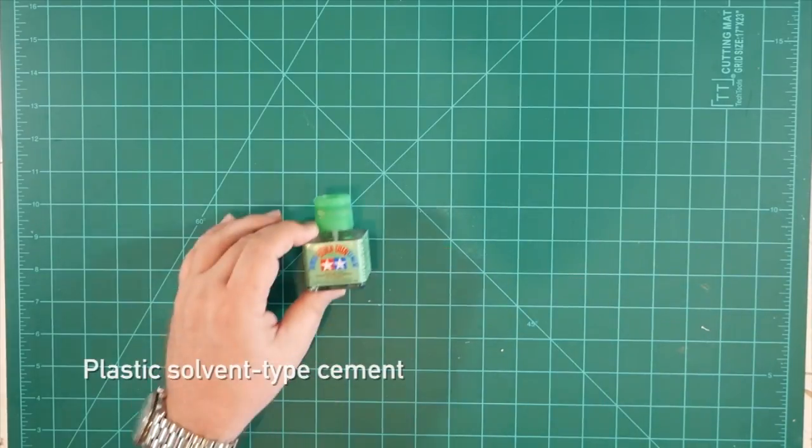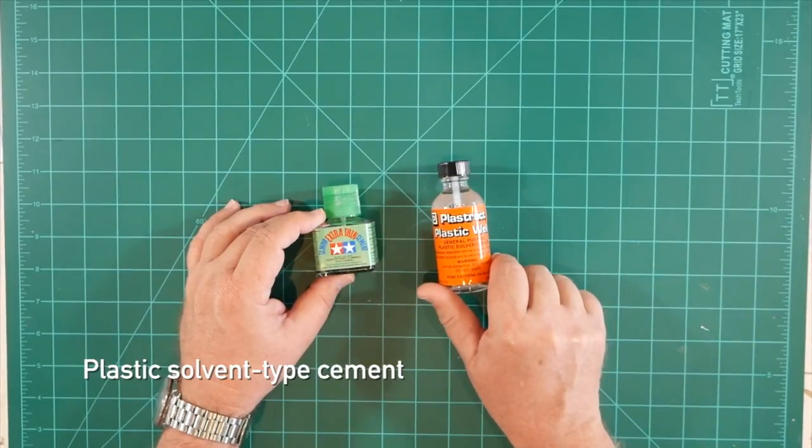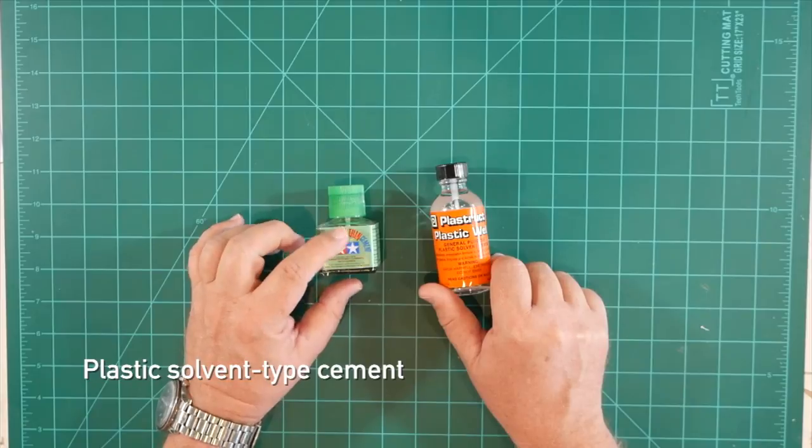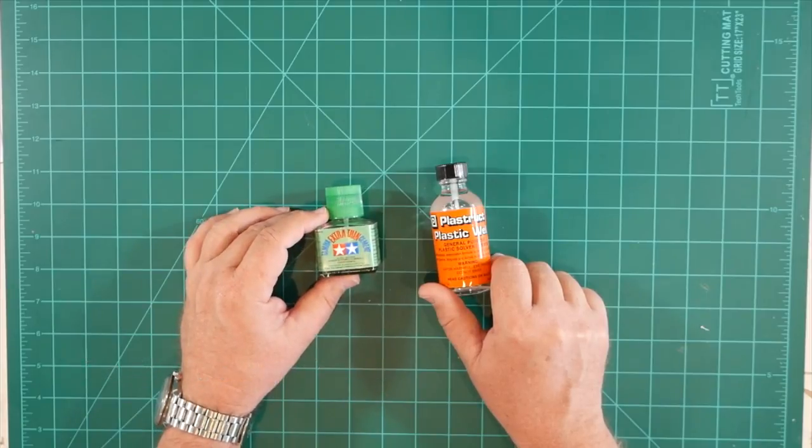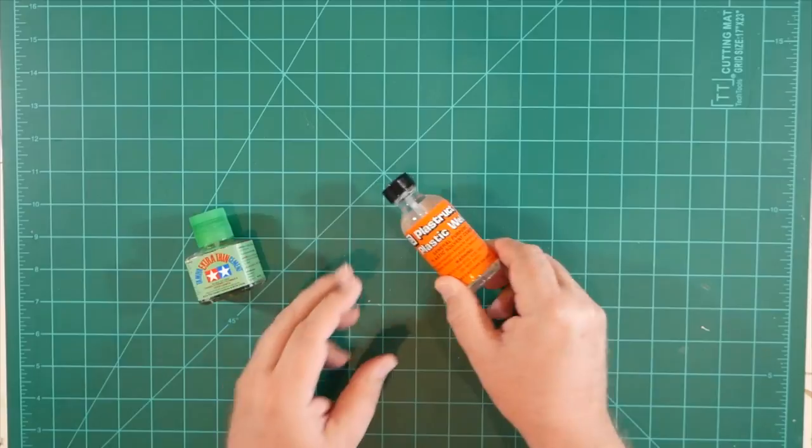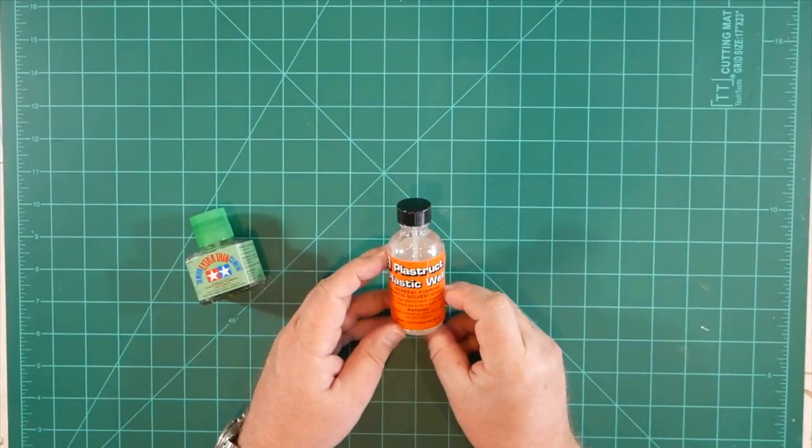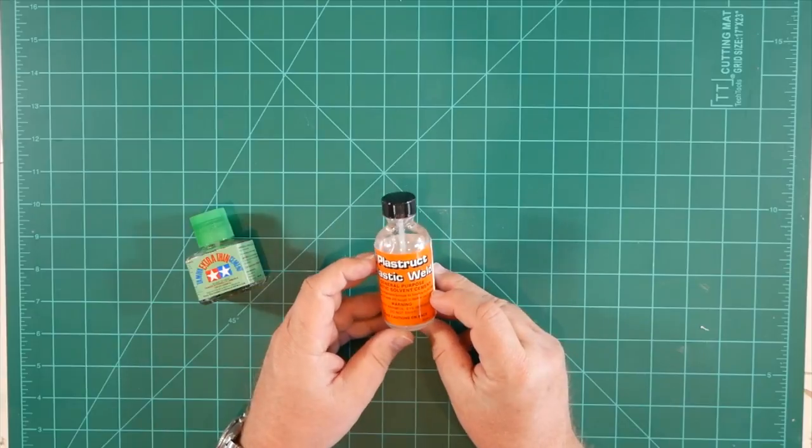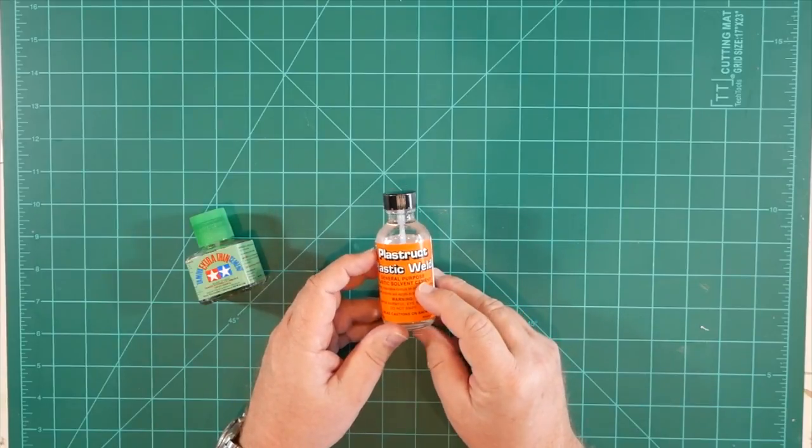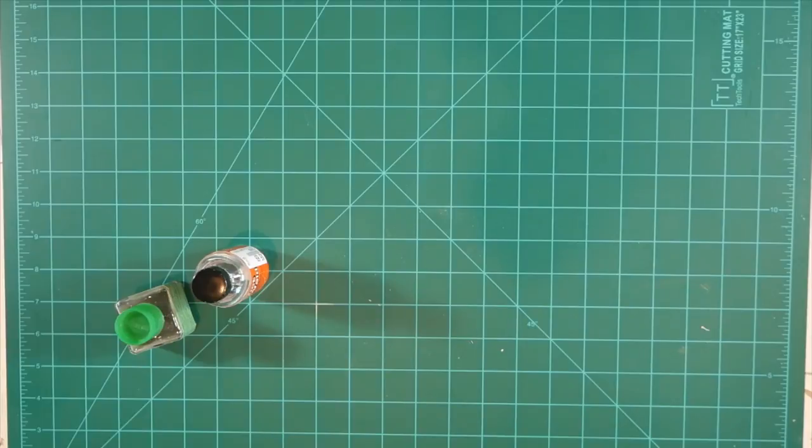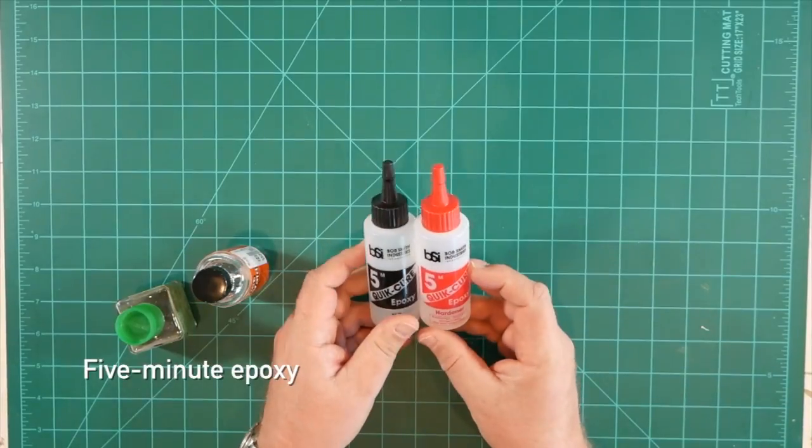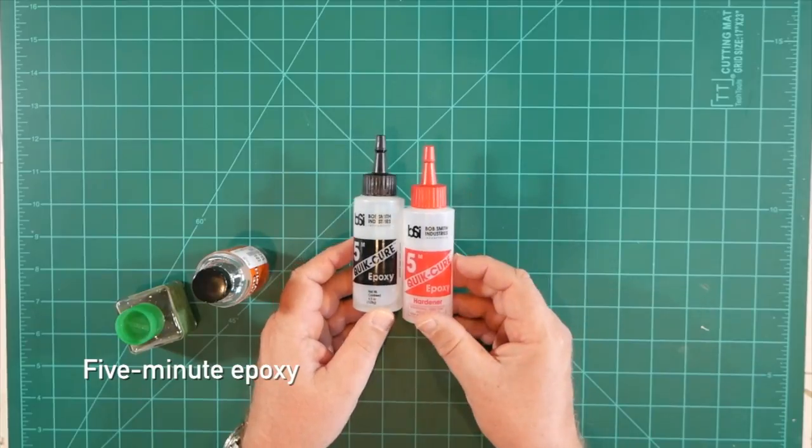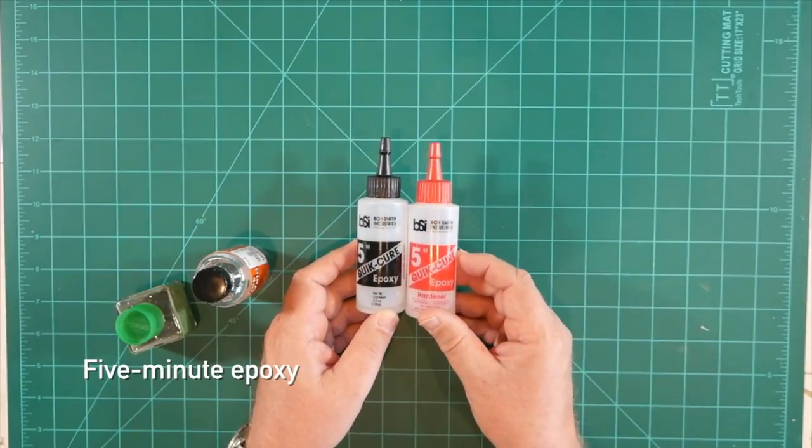It's impossible to build a plastic model without adhesives and these are a couple options that we're using during the build. This Tamiya extra thin cement I like for smaller parts. For larger assemblies such as the fins on this particular model, I'll use this Plastruct more aggressive cement. We'll also be using, for one step in particular, the attachment of the completed fin assemblies to the airframe, some five-minute epoxy. So that's helpful to have on hand as well.